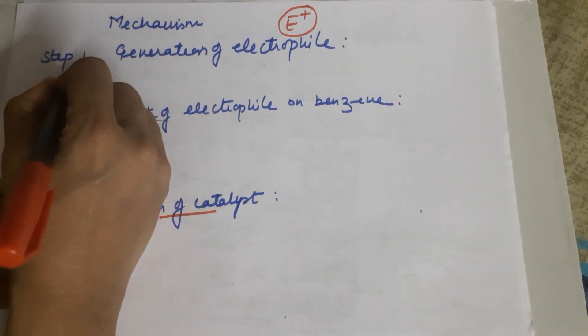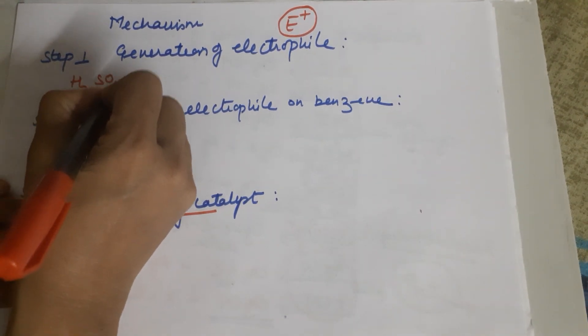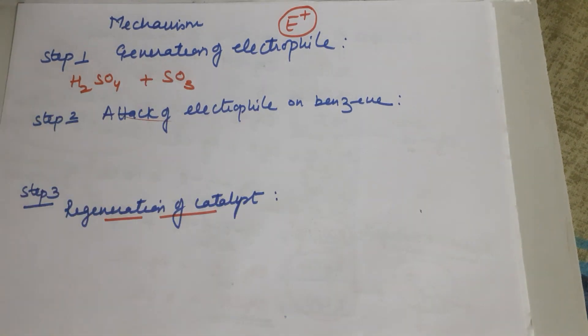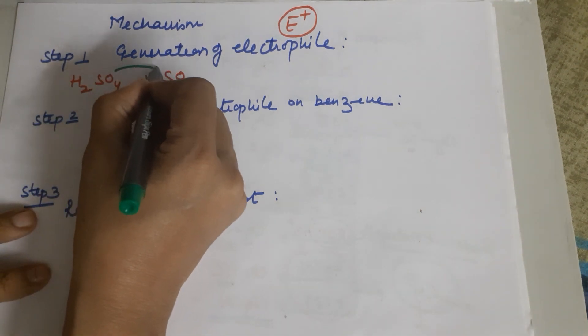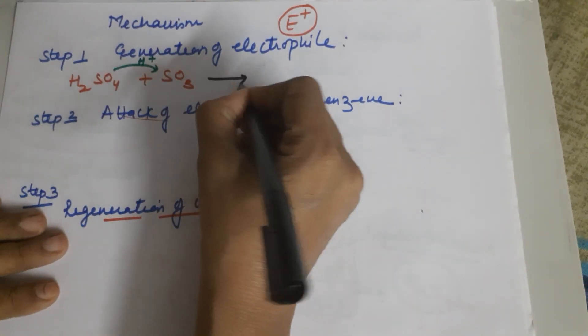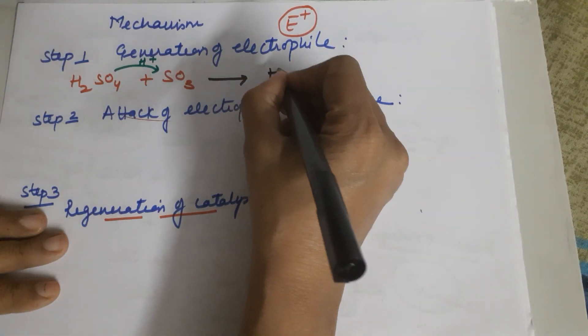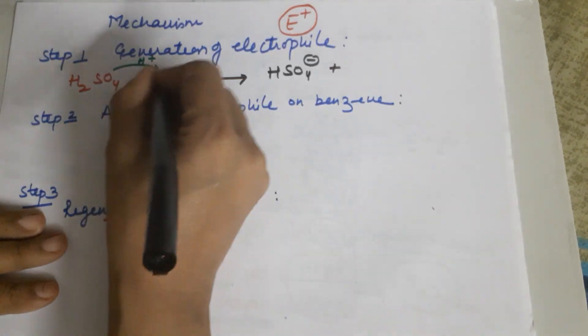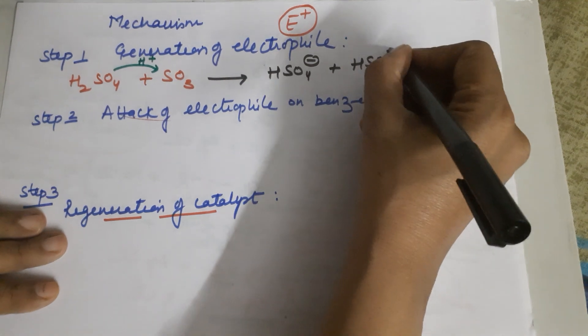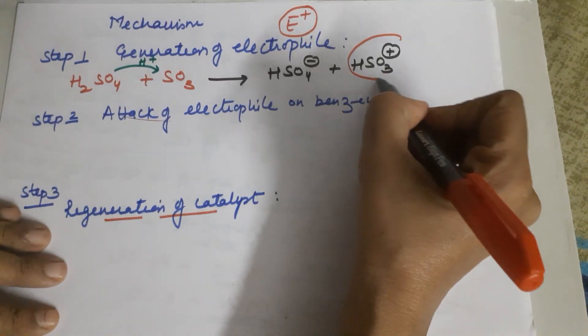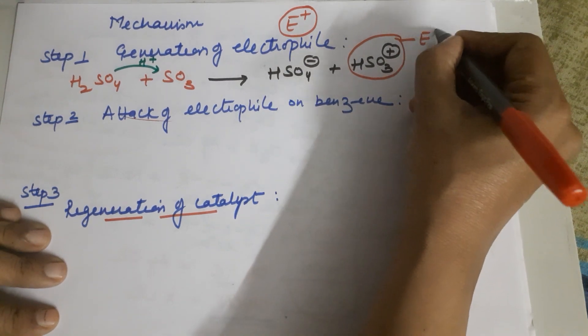So moving on to step one, you have sulfuric acid and SO3 in it because we are talking about fuming sulfuric acid. Sulfuric acid gives H+ to SO3. Hence the reaction that takes place will be sulfuric acid gives the H+, what am I left with? SO4- and what is this changing into? HSO3+. This is the electrophile.